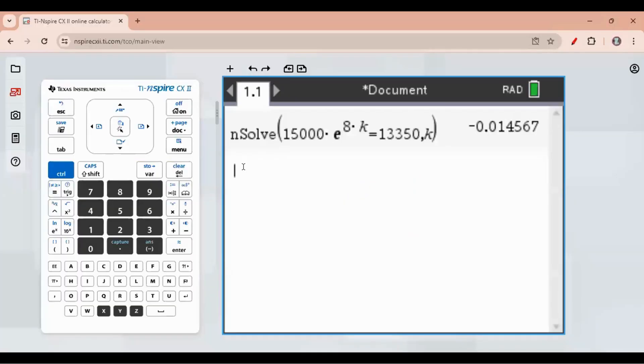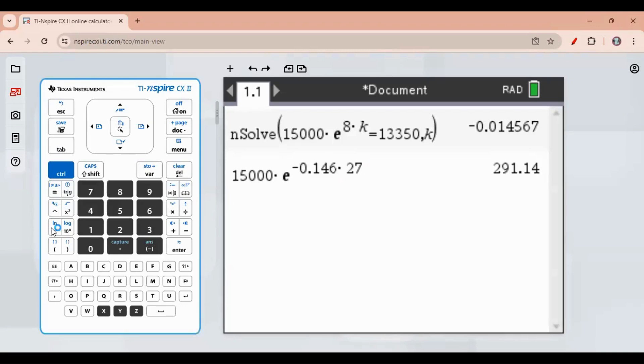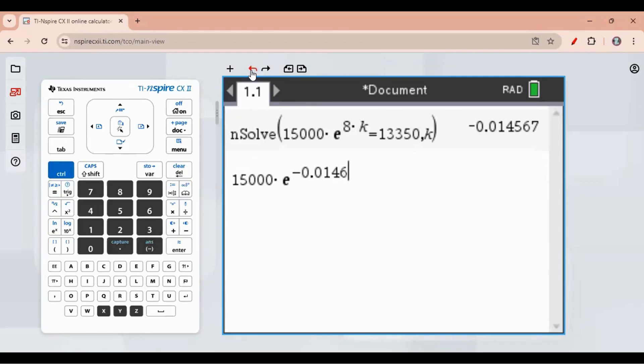So we got 15,000 times e power negative 0.0146 times 27. It's 10,113. And that's our estimated population. 10,113.